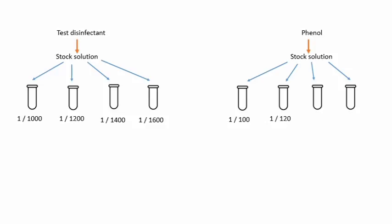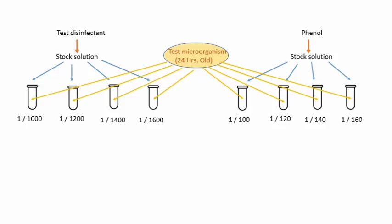Phenol ke dilutions prepare kiye 1/100, 1/120, 1/140, aur 1/160. Iske baad jo test organism hai, us microorganism ko culture kiya aur 24 hours culture ke baad is microorganism ka 0.5 ml lekar add karte hain — test disinfectant ke solution mein aur phenol ke alag-alag dilutions mein bhi. Iske baad in dono sets ko — ek set jisme phenol aur microorganism hai, doosra set jisme test disinfectant aur microorganism hai — 37°C par 48 to 72 hours ke liye incubate karte hain.